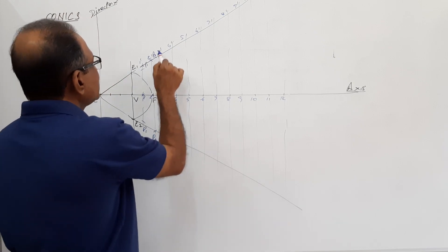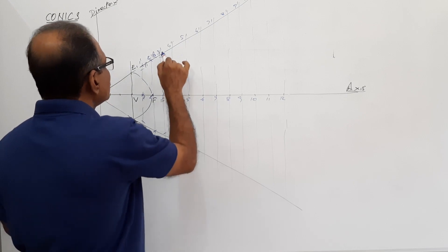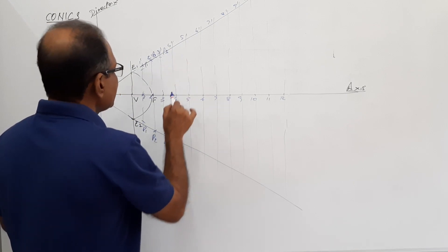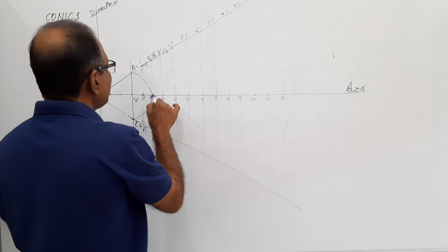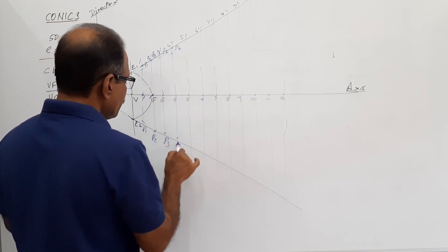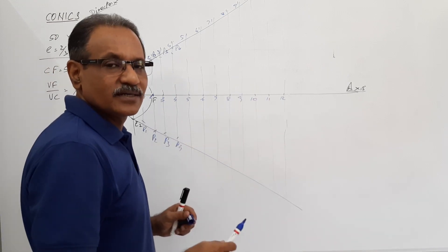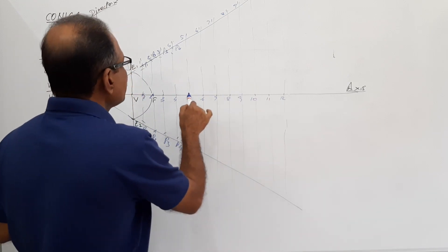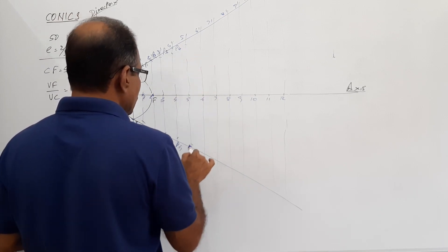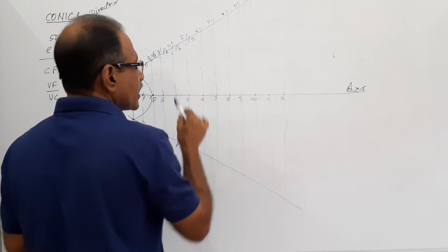Take 3 to 3' in your compass, F is center, cut 3-3' up and down — that is P3. Take 4 to 4' in your compass, F is center, cut 4-4' — that is P4. Similarly proceed: take 5 to 5' in your compass, F is center, cut 5-5' — that is P5. Similarly continue for all remaining points.